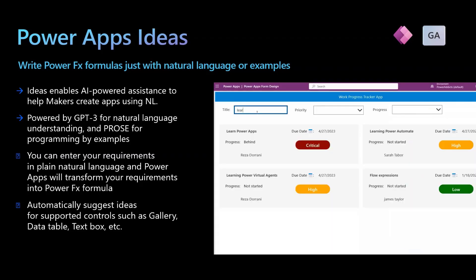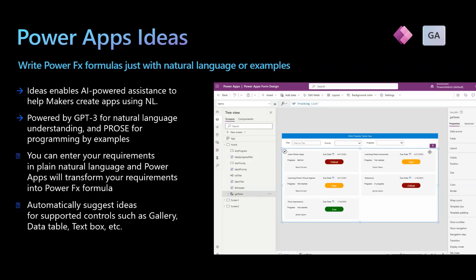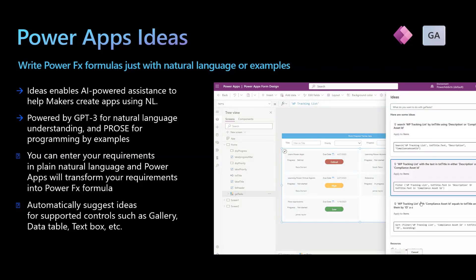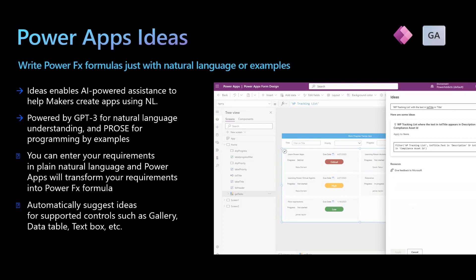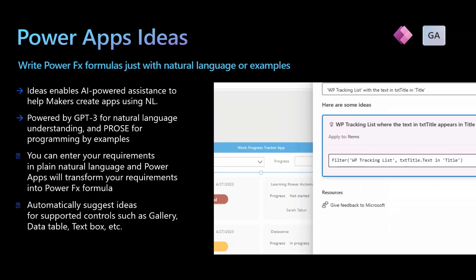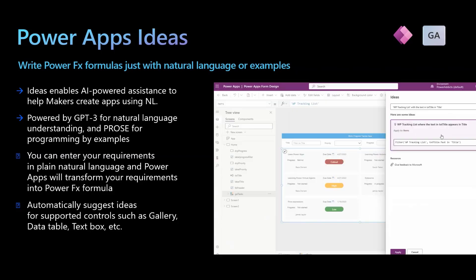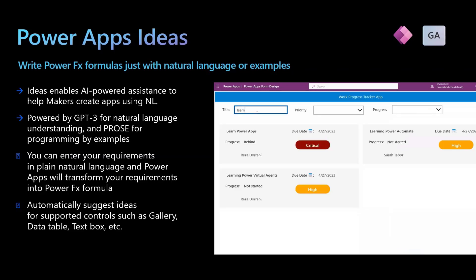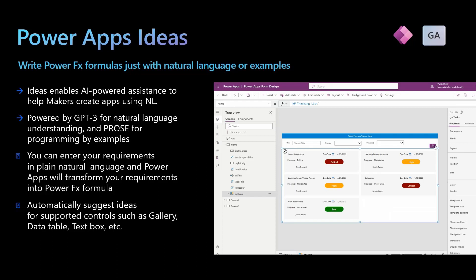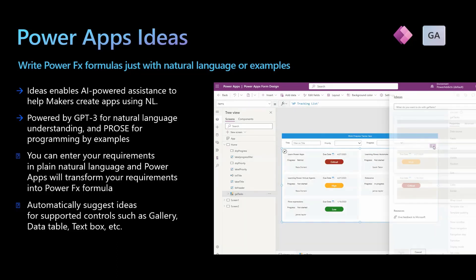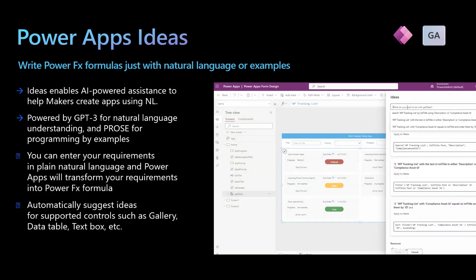This is another PROS-based feature where you can enter your requirements in plain natural language or by giving examples, and the Ideas feature will transform your requirements into Power FX formulas. It also automatically suggests ideas for supported controls like gallery, tables, text box, and so on.